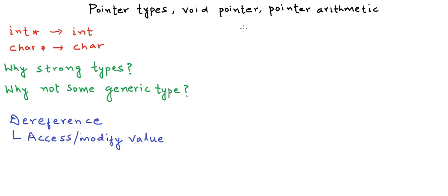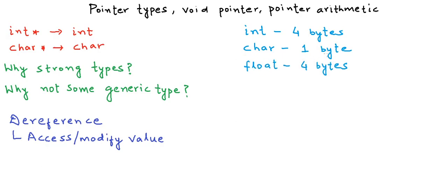As we know, data types have different sizes. In a typical modern day compiler, an integer is stored in four bytes, a character variable is stored in one byte, a float is again stored in four bytes. And these variables differ not only in their sizes, they also differ in how we store information in whatever bytes are available for these variables or data types.